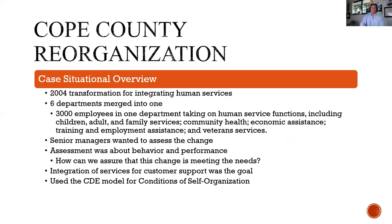Here is a case study I found on Google Scholar. Cope County is an alias name, but it's a large county governmental institution with a lot of employees. In 2004, they were going through a transformation integrating human services. Six departments merged into one, creating a 3,000-employee department taking on human service functions including children, adult and family services, community health services, economic assistance, training and employment assistance, and veteran services.